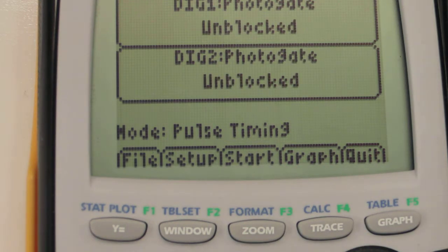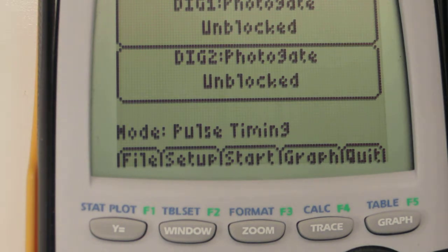And I'm ready to begin. So I've got my setup all ready to go with the cart at the top of one of the photo gates. And I'll press Start, which is this key right here.